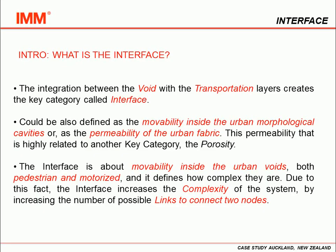Where is the interface anyway? In the IMM methodology, the interface is the key category composed by the integration between two IMM's horizontal layers: the void with the transportation. It could also be defined as the movability inside the urban morphological cavities, or as the permeability of the urban fabric, highly connected to another key category, the porosity.